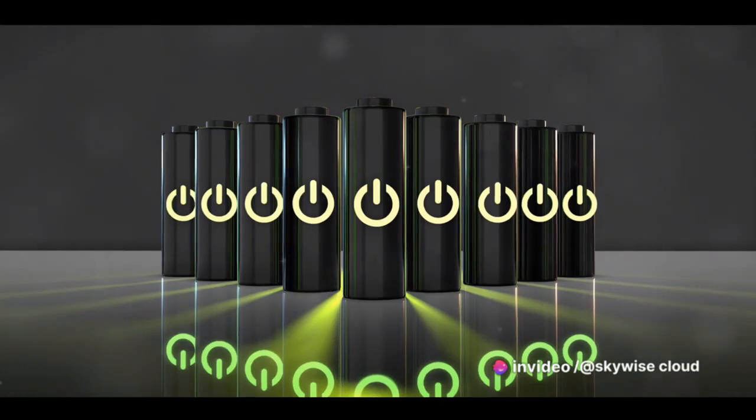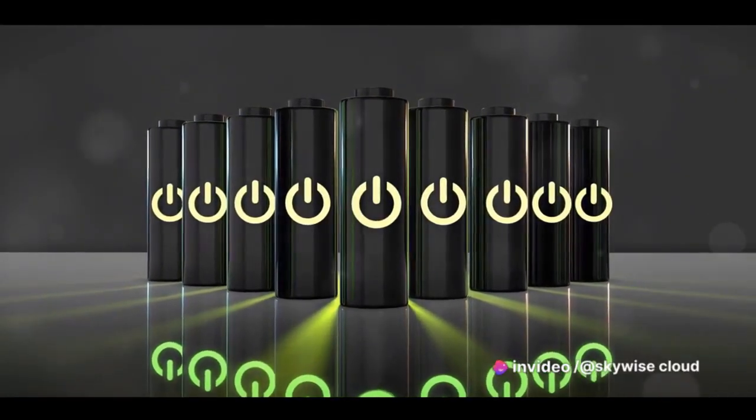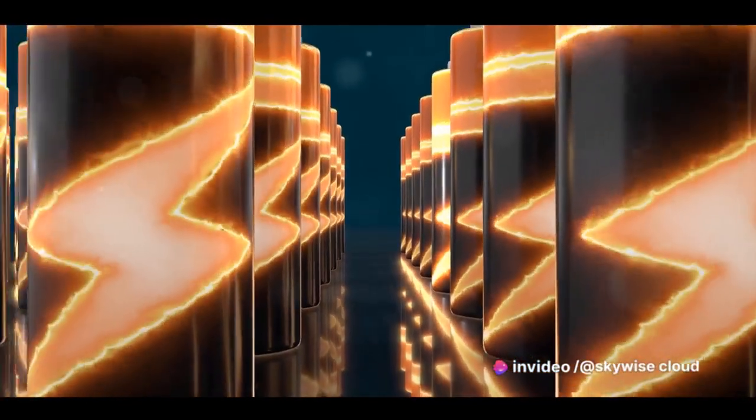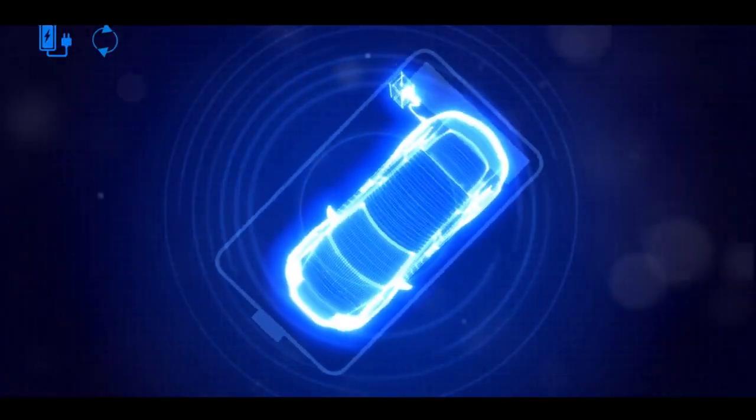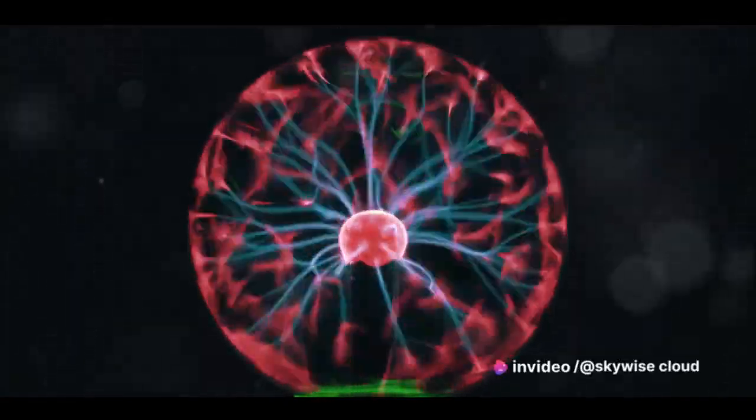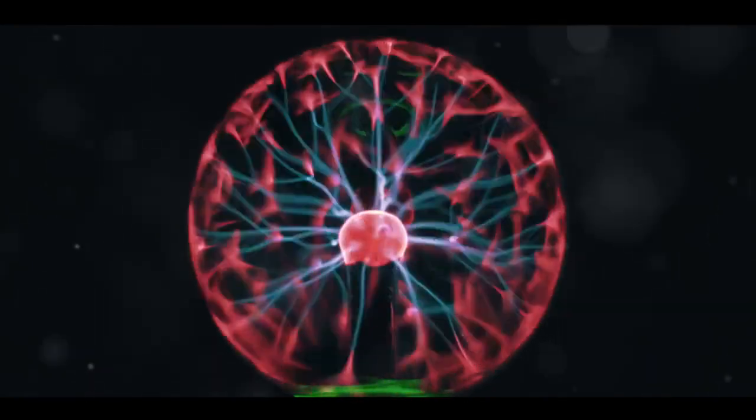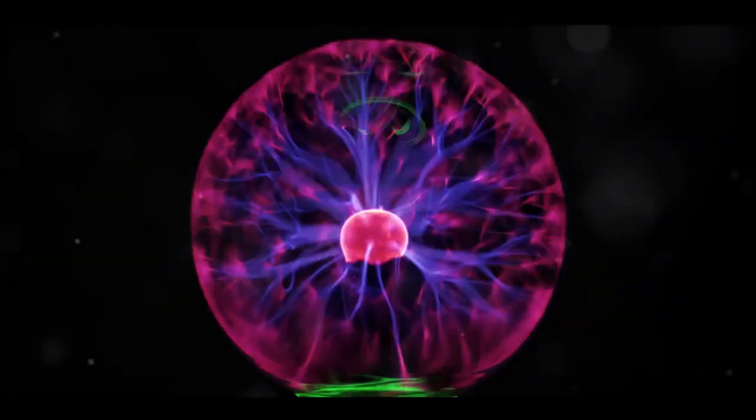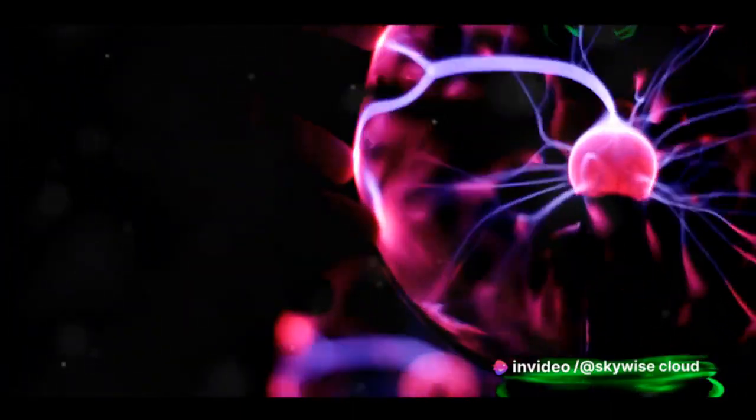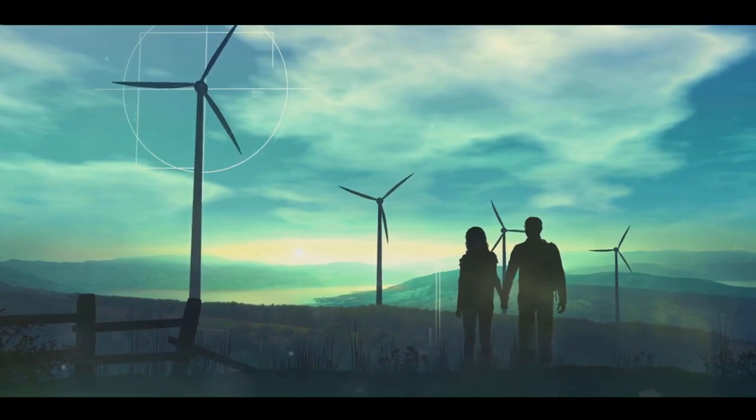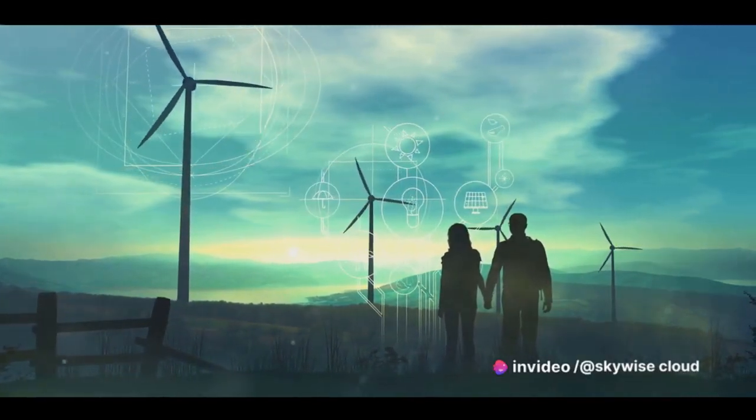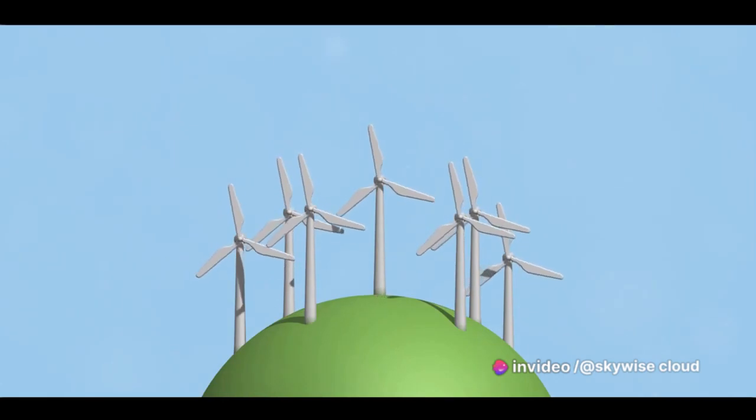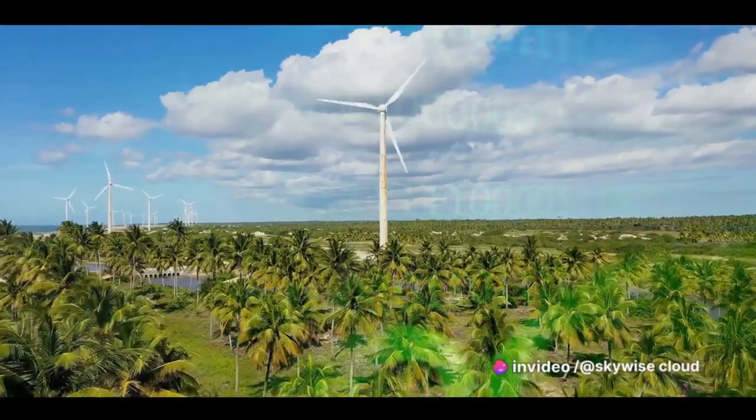And it doesn't stop there. The equation also plays a pivotal role in energy storage. By applying quantum principles, we could potentially create batteries that not only store more energy but also last significantly longer. This could revolutionize everything from electric cars to renewable energy grids. The McGinty equation also opens the door to more efficient energy conversion. It allows us to transform power from one form to another with minimal loss, maximizing the use of every single watt. This could mean the end of energy waste, a significant step towards sustainability. The benefits of renewable energy are immense, from reducing greenhouse gas emissions to creating a healthier environment. But the true potential of renewable energy lies in its sustainability. And quantum power, guided by the McGinty equation, is the key to unlocking that potential.